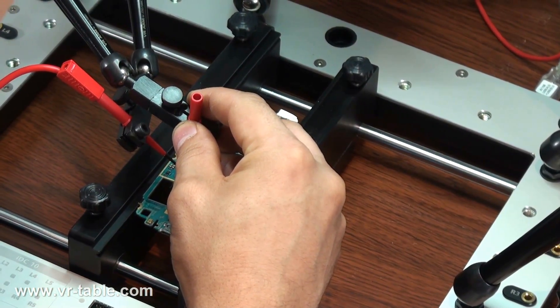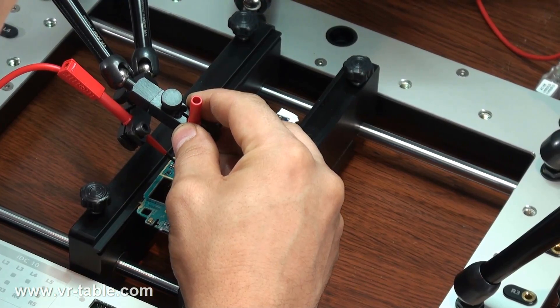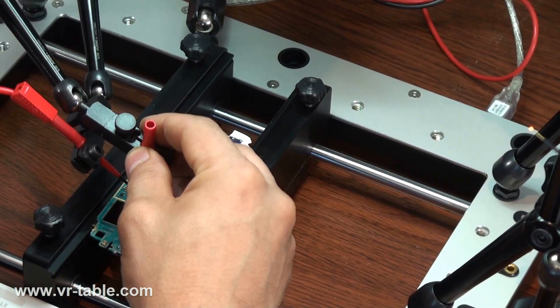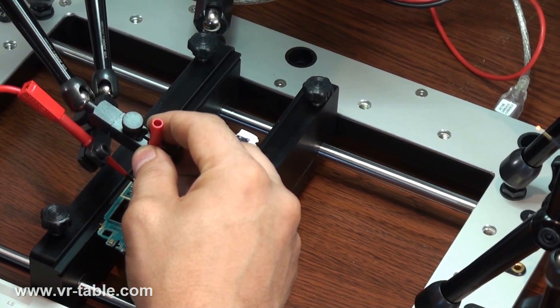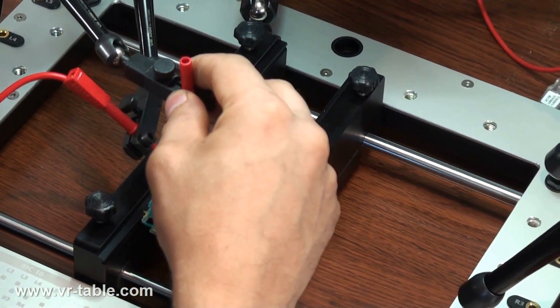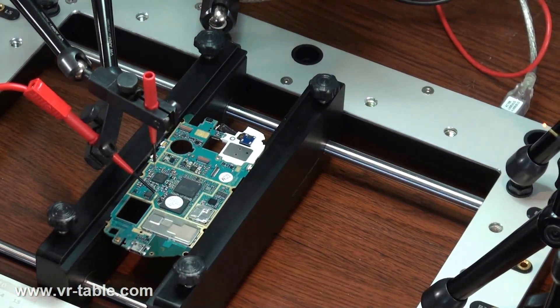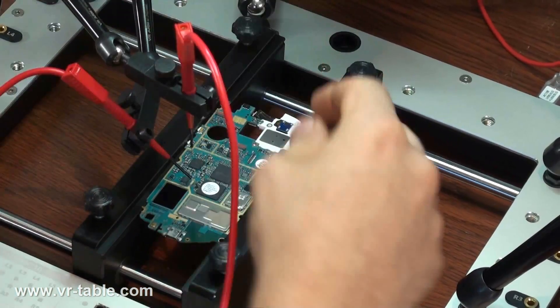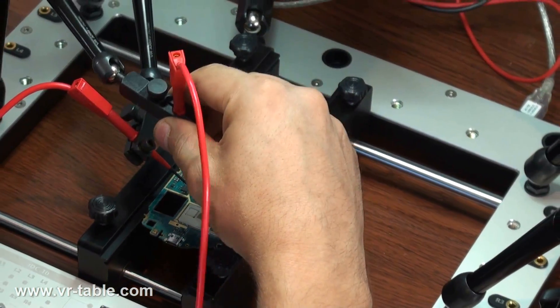After you locate the eMMC ISP point on PCB, simply loosen the screw on the VR arm and gently position the probe above the point. Then you just tighten the screw to lock the VR arm and probe in place. You can also use the precise screw available on top of each VR arm to adjust the angle of the probe. This is the most important thing in the whole connection process.